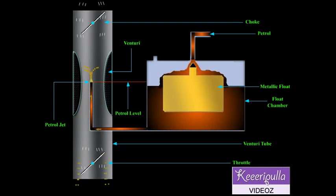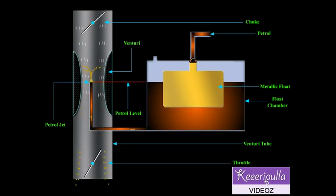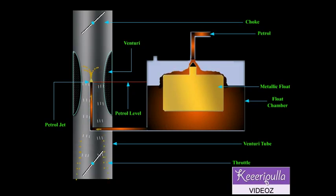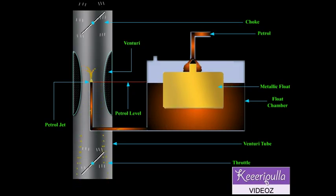For starting the engine, a rich fuel mixture is required and this can be obtained by partly closing the choke valve, thereby reducing the amount of air.